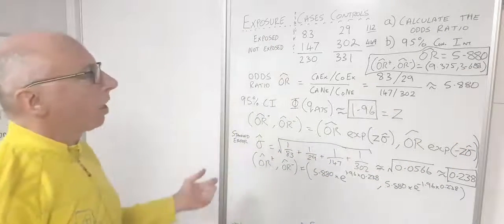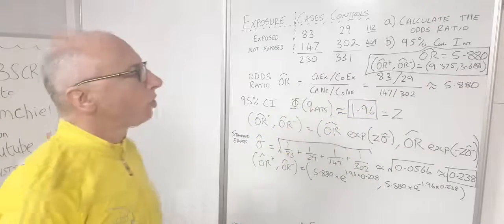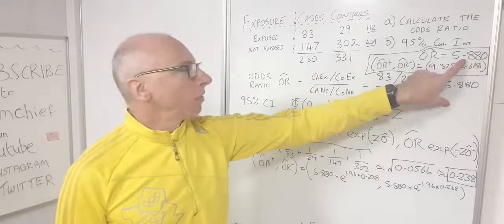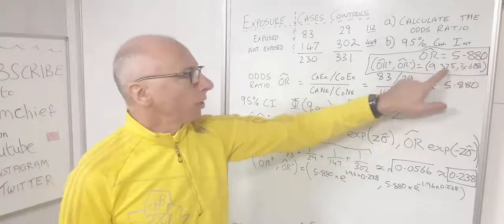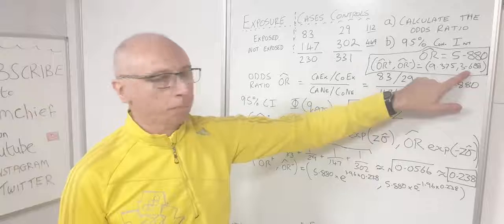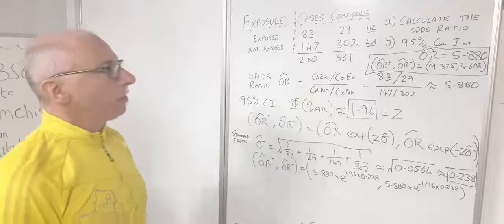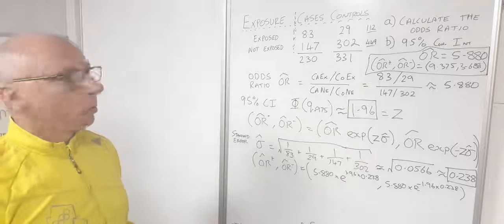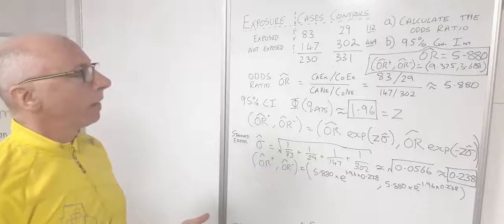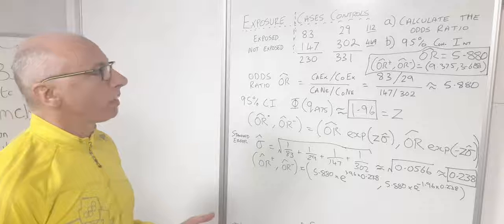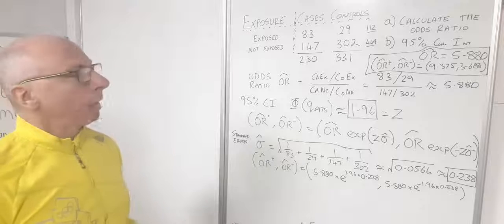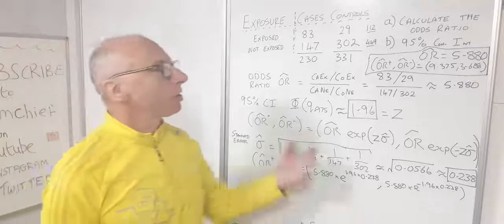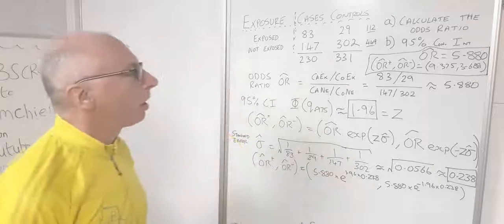With our odds ratio being quite a large positive number, and our confidence interval also containing large positive numbers, we can say there is definitely some correlation between being exposed to chemicals from the burning at the chemical factory and experiencing bad symptoms. That's our conclusion from this statistical test using the odds ratio.